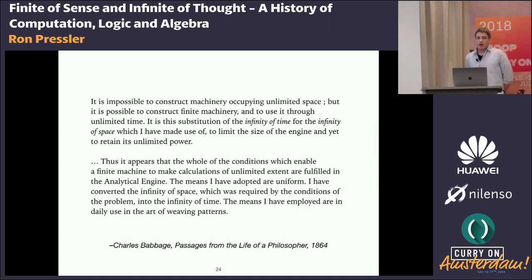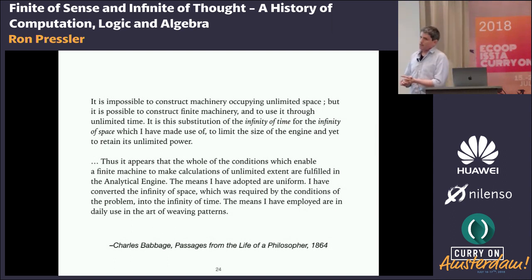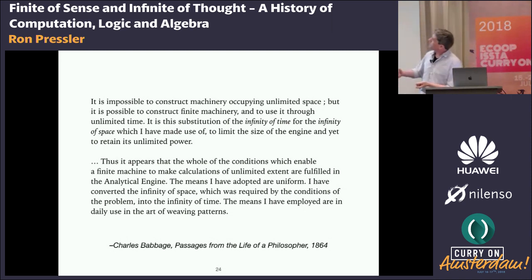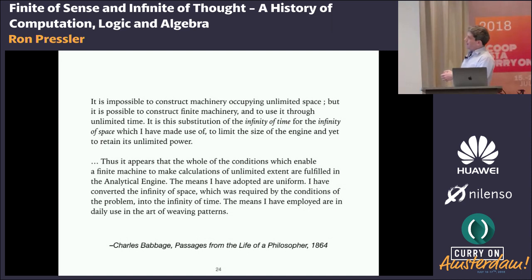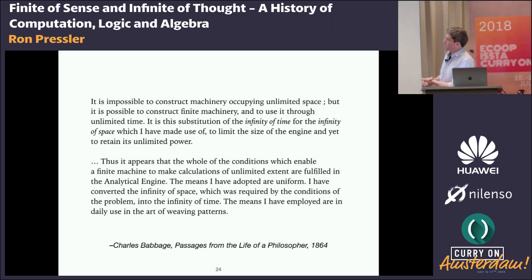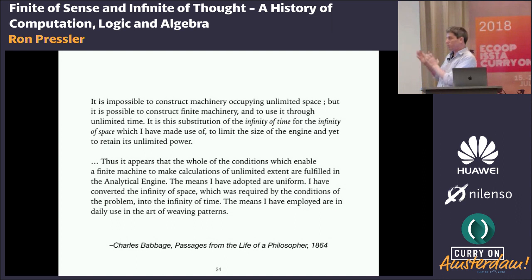Babbage made some very deep observations about universal computation. For example, he realized that he would need some infinite resource but had to build a finite machine. He said, 'it is this substitution of the infinity of time for the infinity of space which I've made use of to limit the size of the engine, and yet to retain its unlimited power.' But note that it lacks any rigorous analysis — he was right, but he wasn't able to present exactly why.